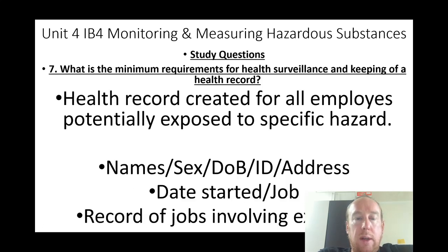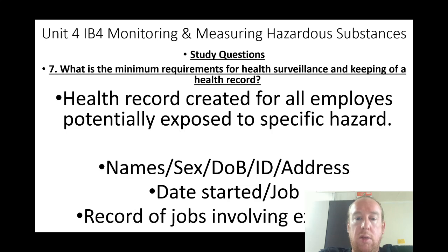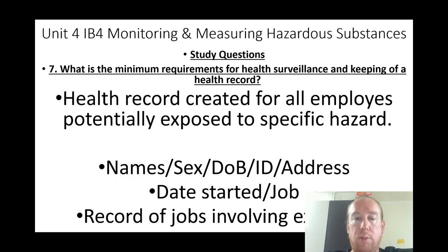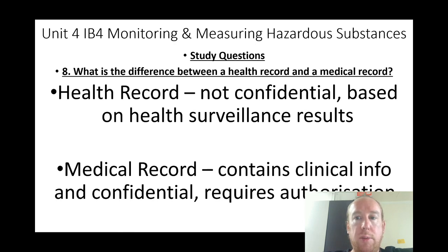What are the minimum requirements for health surveillance and keeping of health records? Health records must be created for all employees potentially exposed to a specific hazard, including name, sex, date of birth, ID, address, date started, job record of jobs involving exposure. What is the difference between a health record and a medical record? A health record is not confidential and is based on health surveillance results; a medical record contains clinical information, is confidential, and requires authorization to access.